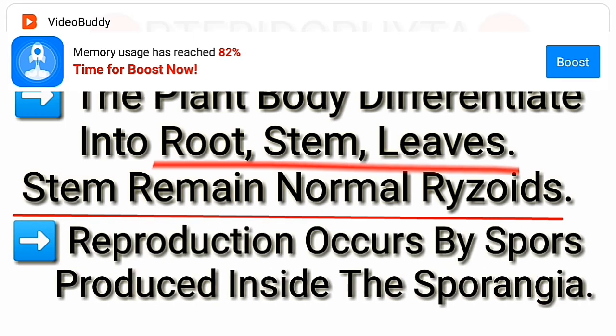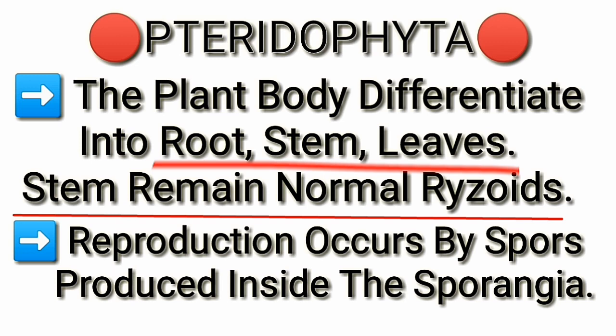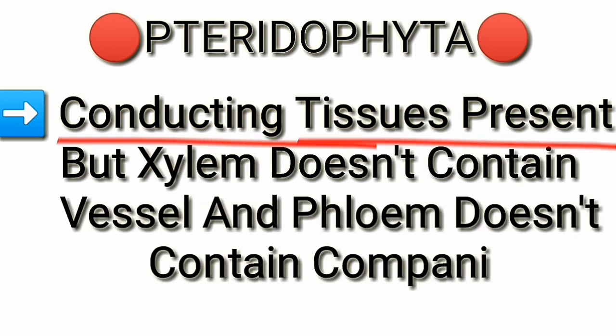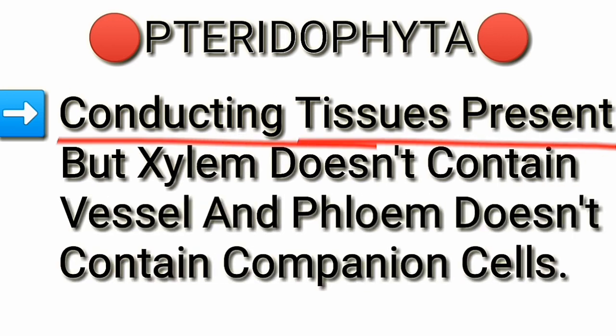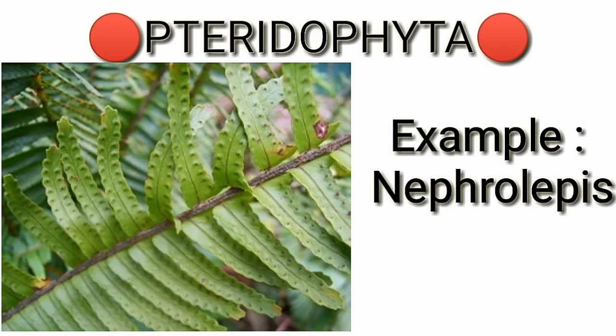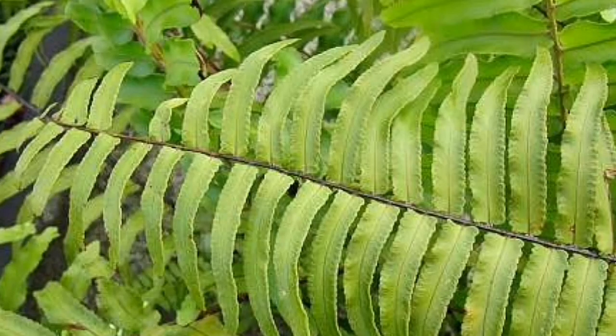Reproduction in pteridophytes occurs by spores produced inside the sporangia. Conducting tissues are present, but xylem does not contain vessels and phloem does not contain companion cells.